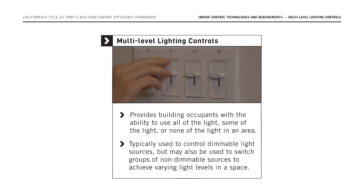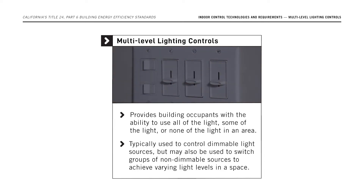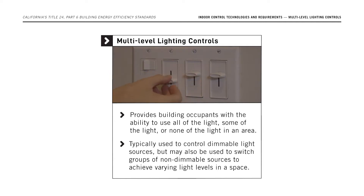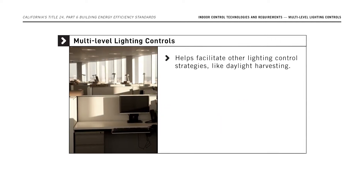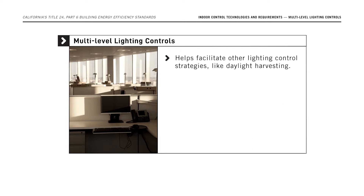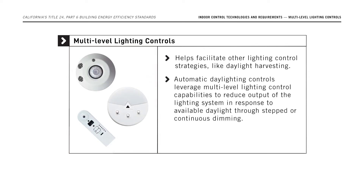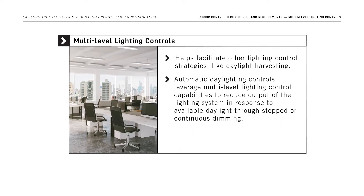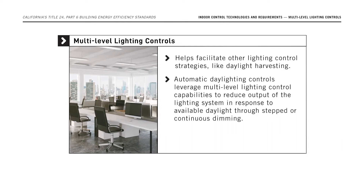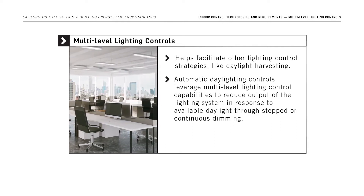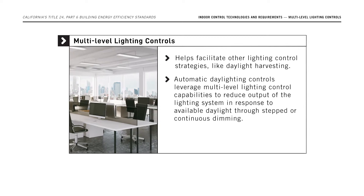These controls reduce lighting energy use by allowing users to precisely control the amount of light in the space based on occupant needs. Multi-level lighting controls also help facilitate other lighting control strategies like daylight harvesting. In this strategy, automatic daylighting controls leverage the multi-level lighting control capabilities to reduce the output of the lighting system in response to available daylight, either through stepped or continuous dimming.